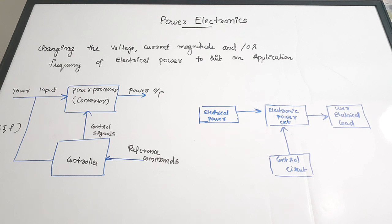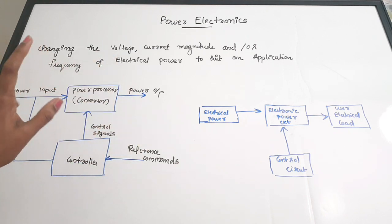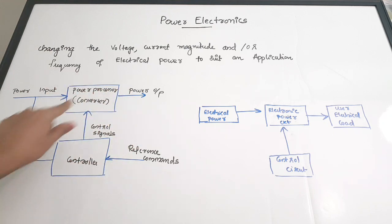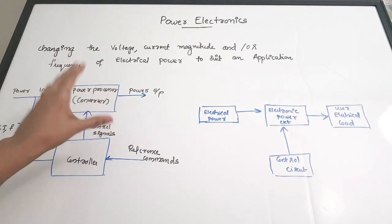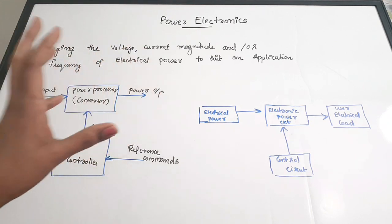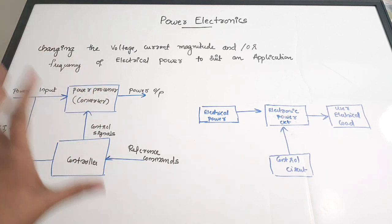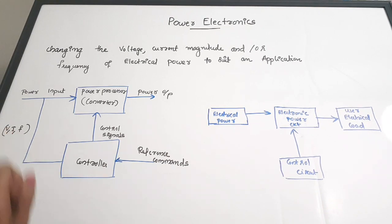In block diagram form, there is a power input at a constant or normal level, given to a converter or processor. With the help of certain reference signals or control signals, we convert it to the adequate or appropriate format, and we get a power output proper for the usage of an electronic device. The variables being controlled are voltage, current, and frequency.